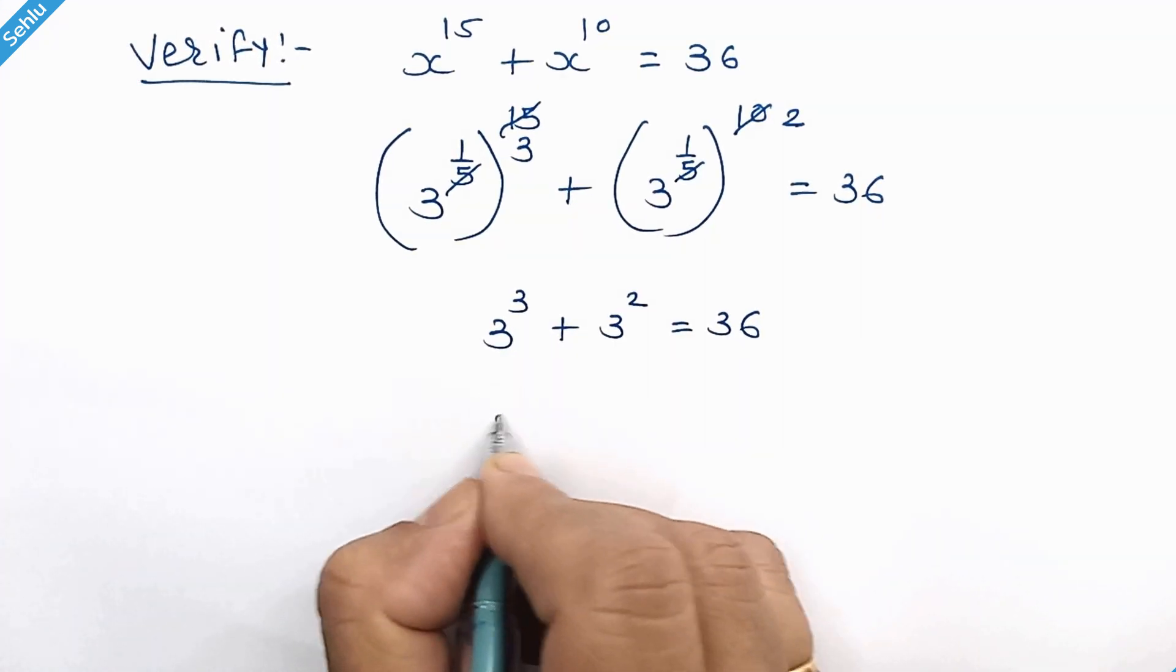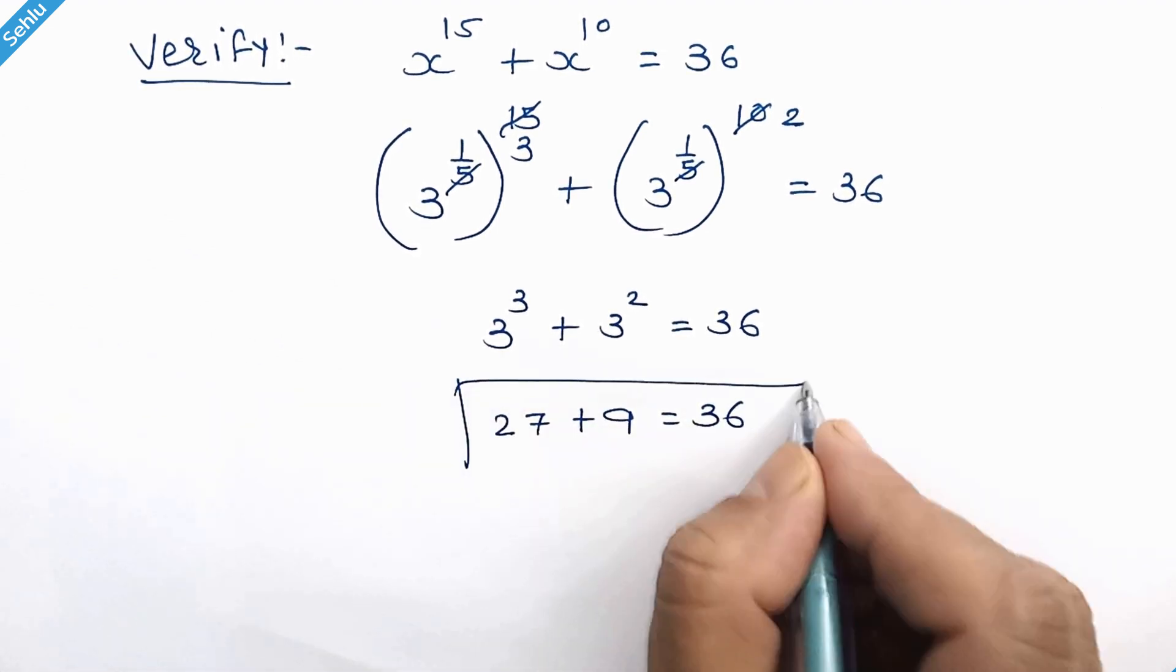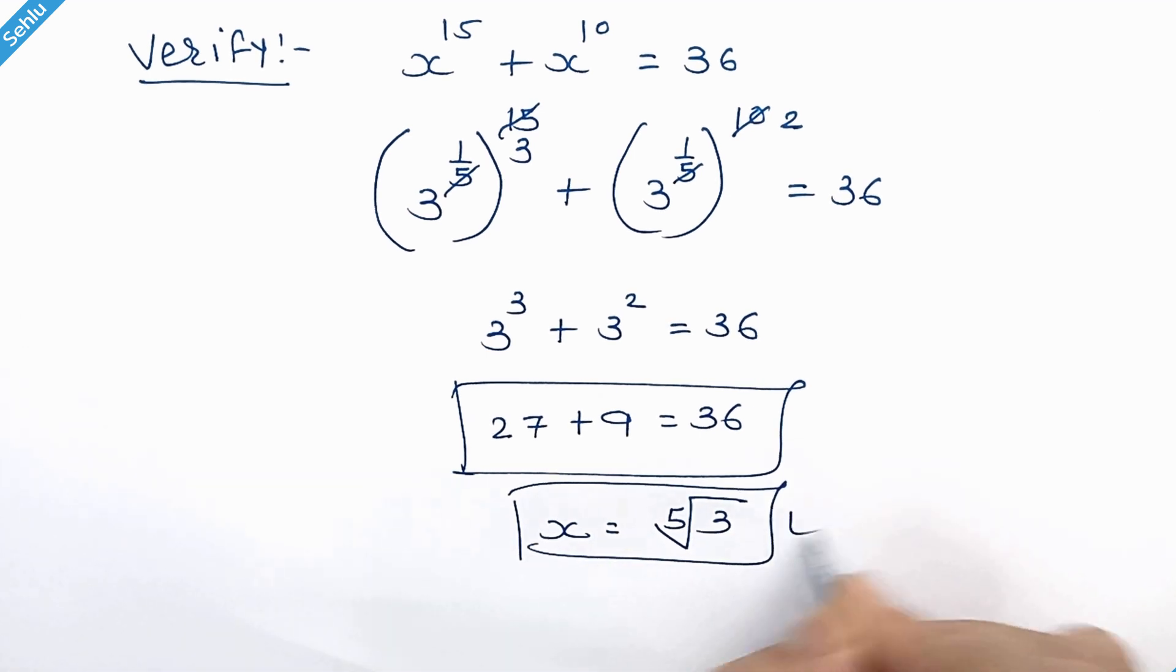3 cube is 27 and 3 square is 9. So x is equal to fifth root of 3 is the correct answer.